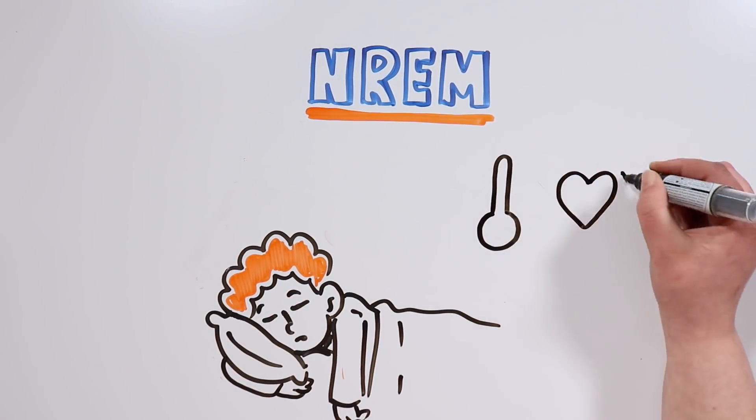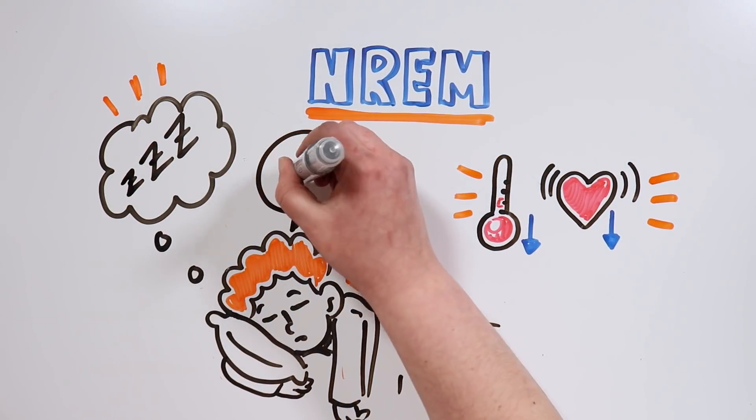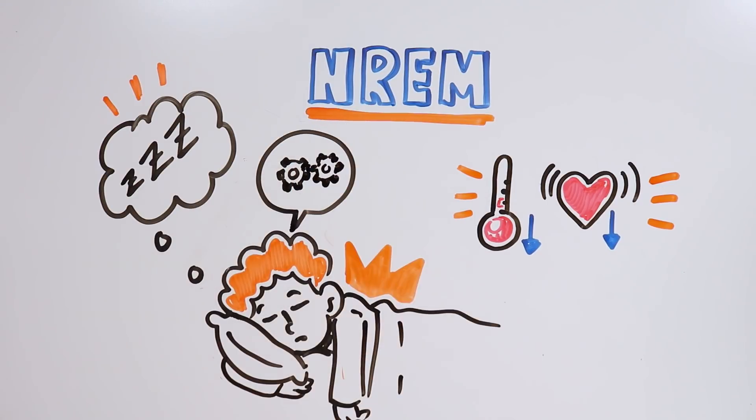Shortly after, in the second phase of sleep, our body temperature and heart rate decrease. Our body will prepare to go into deep sleep, and thus, our brain and muscular activity will decrease even more.